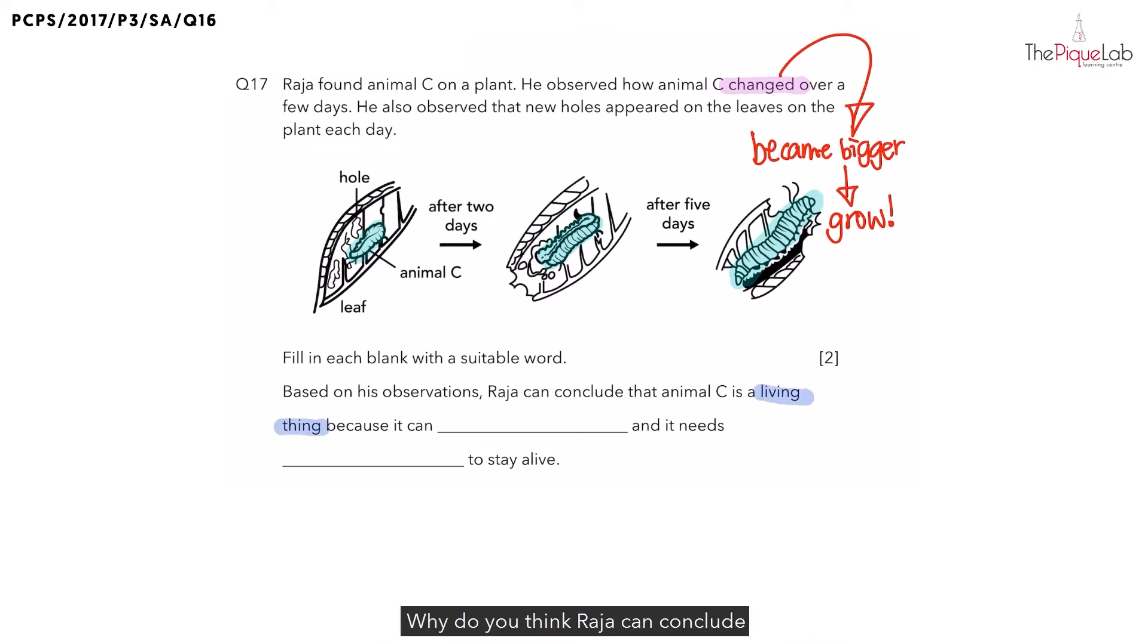Why do you think Raja can conclude that C is a living thing? What did we mention about C earlier? We mentioned that C became bigger, which means that animal C is a living thing.